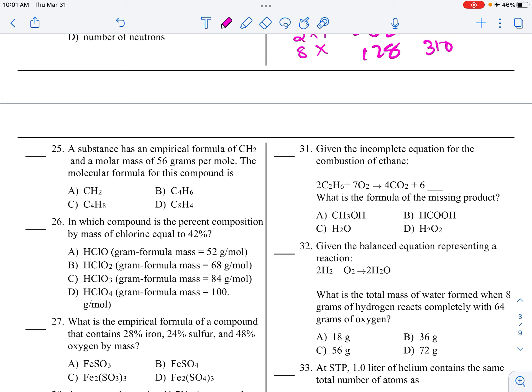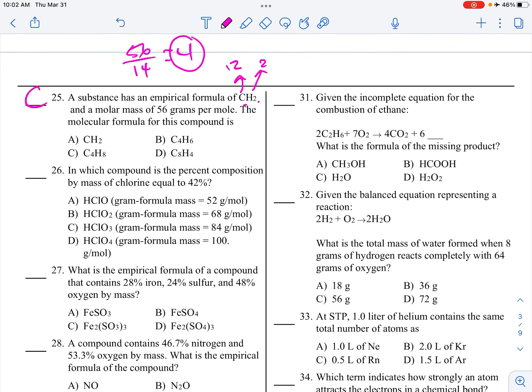A substance has an empirical formula of CH2 and a molecular mass of 56 grams per mole. What is the molecular formula? So, what you need to do is figure out what's the GFM of your empirical. So, this is 12, and this is 2 times 1, so 2. So, 14 is the most basic, and I have 56. So, 56 divided by 14 gives me a factor of 4. What do I do with this 4? I'm going to multiply the subscripts. So, C4H8 when I multiply subscripts.